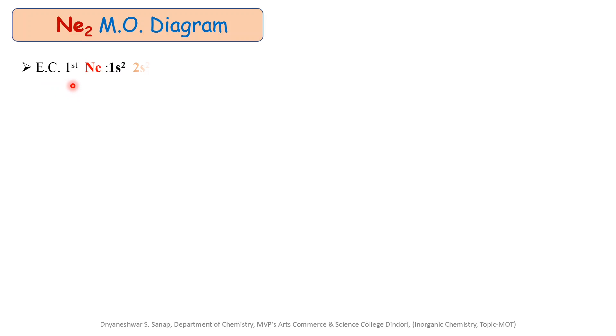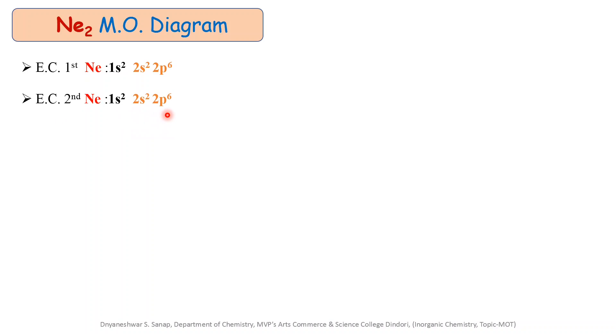Basically, any Ne2 molecule is formed by the combination of two atoms of neon. Let us see the electronic configuration of the neon atom. The electronic configuration for neon is 1s², 2s², and 2p⁶. Similarly, the electronic configuration for the second combining neon atom is 1s², 2s², and 2p⁶.